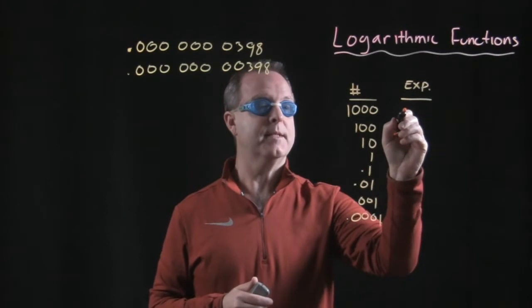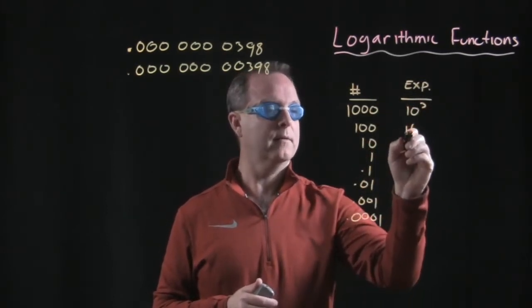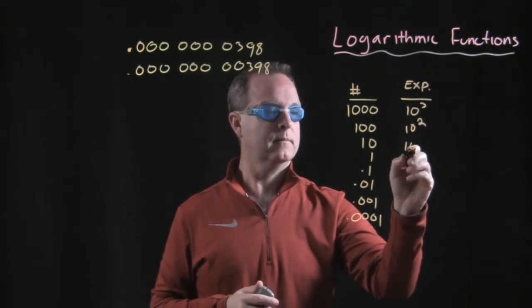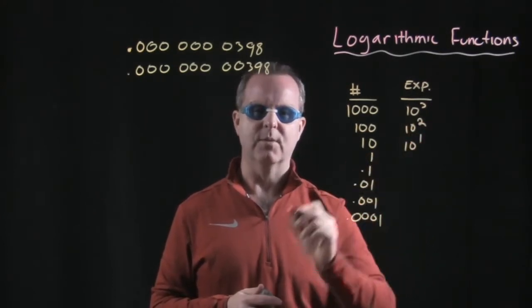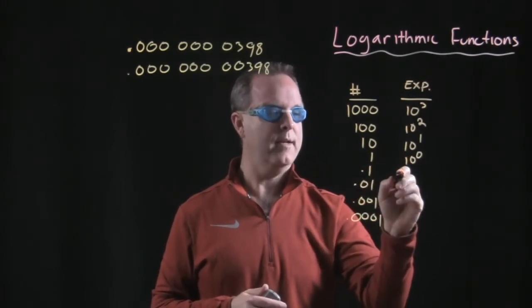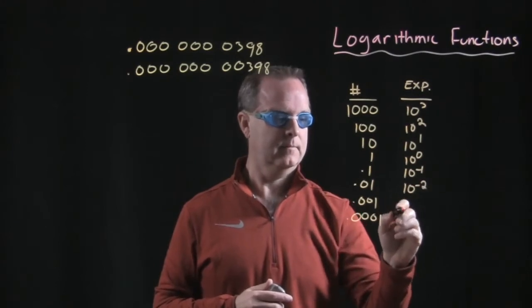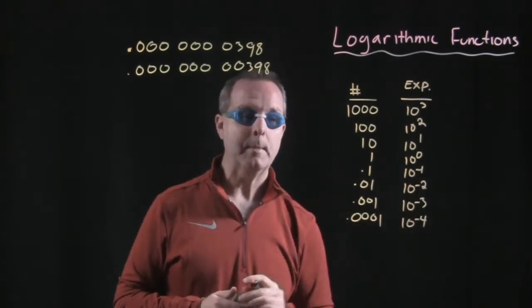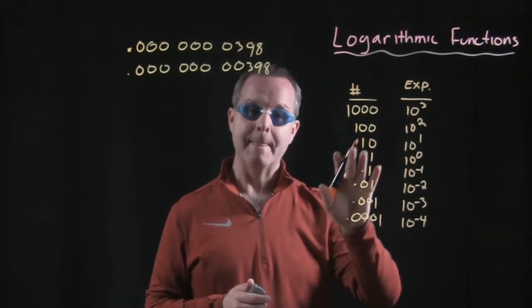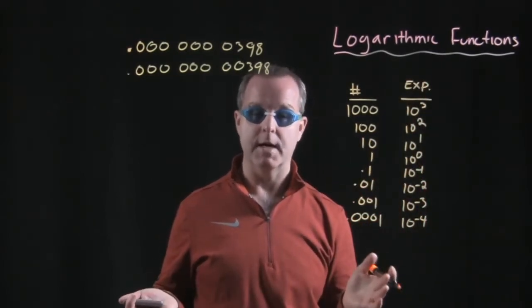Well, this becomes 10 to the third. Likewise, if we work our way down, one, what's that one? Remember, that's 10 to the zero. Point one is 10 to the negative one. You guys all right with that? Just took a normal number and rewrote it in exponential notation, a notation that we got used to understanding.